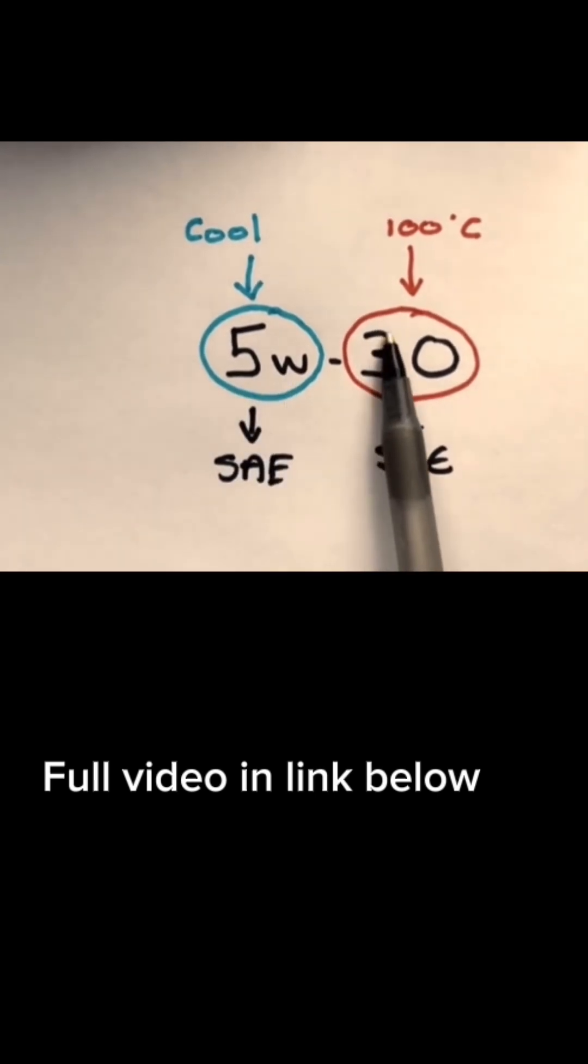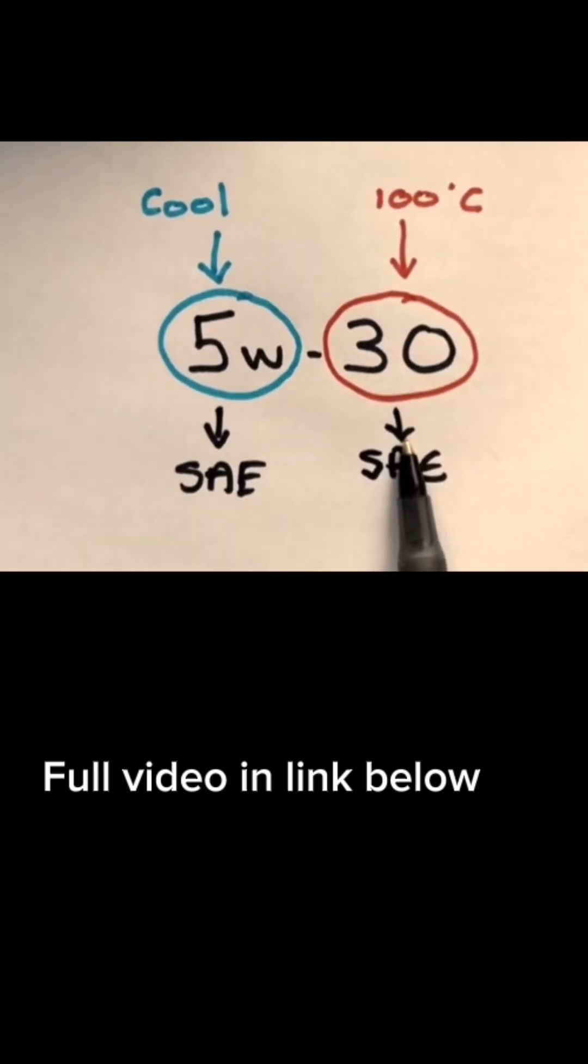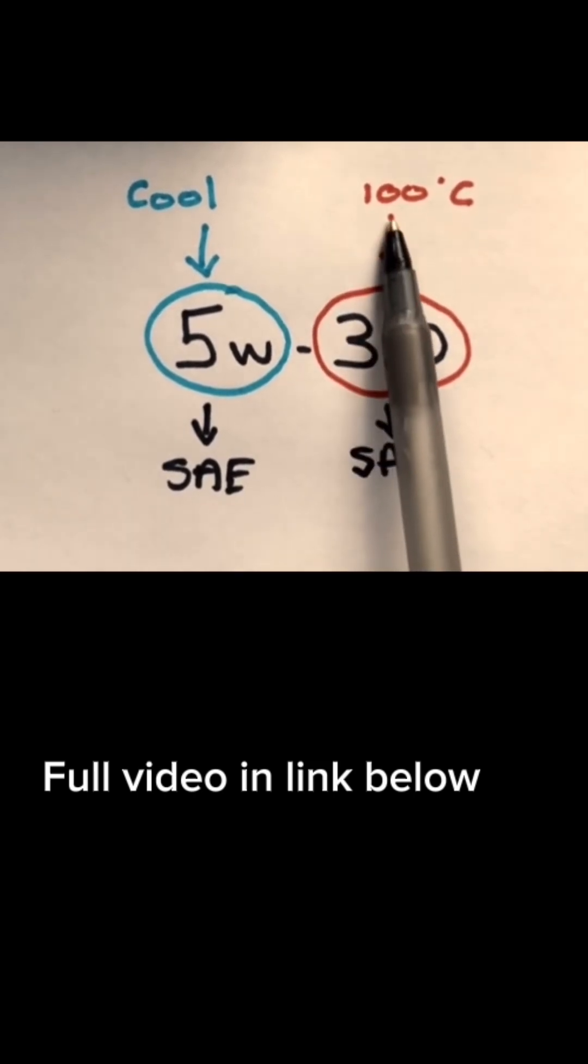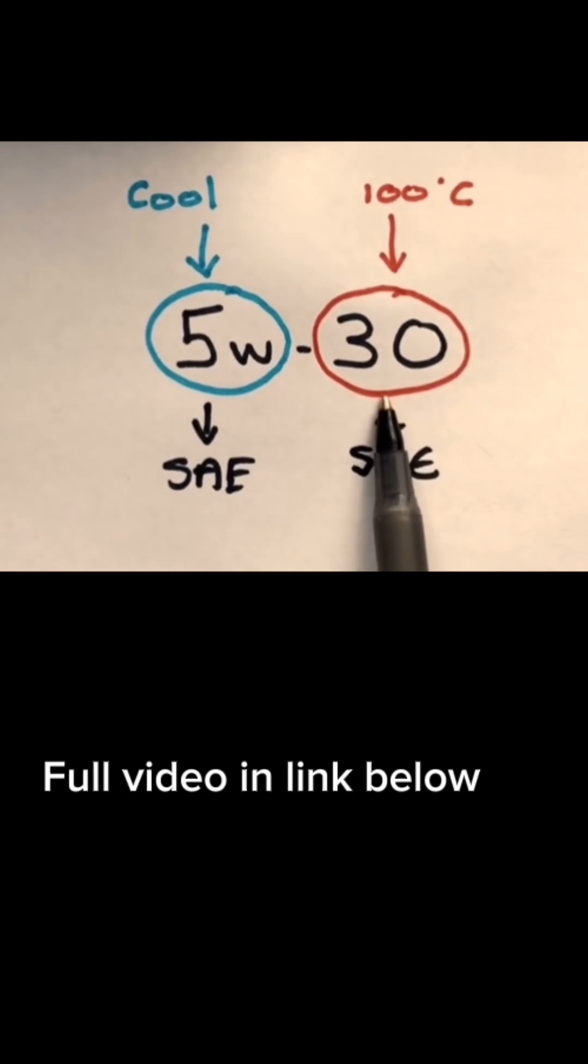And when it gets up to temperature, it acts like an SAE 30 so that it's not too thin. Because if it gets too thin at this temperature, it will lose its lubricant efficiency and put wear on the engine.